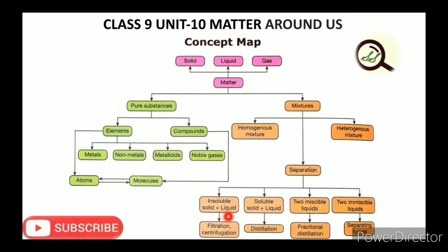Separation methods include filtration and centrifugation for insoluble solids in liquids — centrifugation works like a washing machine. Distillation is used for soluble solids in liquids, such as separating pure water from salt water. Fractional distillation is used for miscible liquids like petroleum to separate petrol, diesel, and kerosene. A separating funnel is used for immiscible liquids like water and oil.